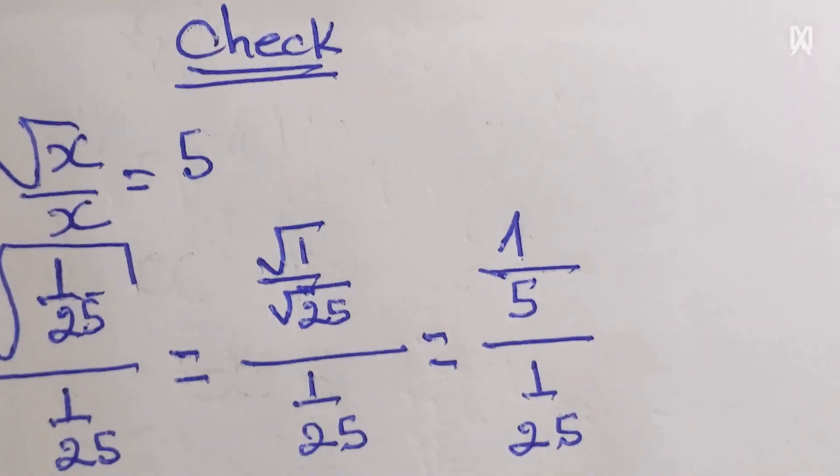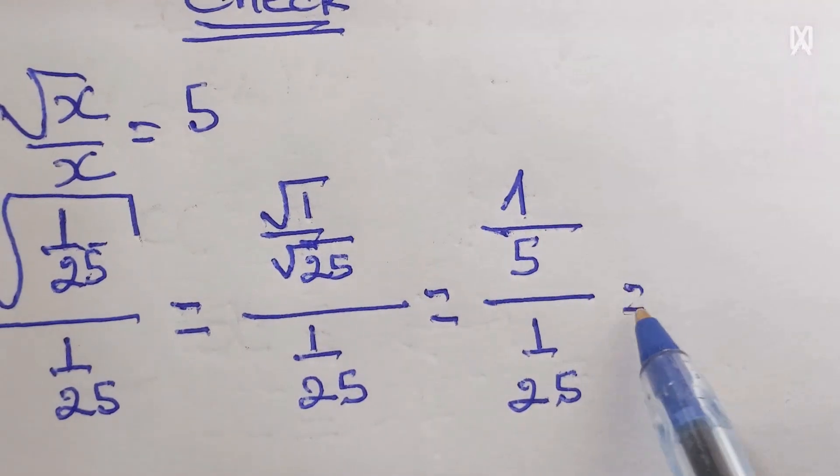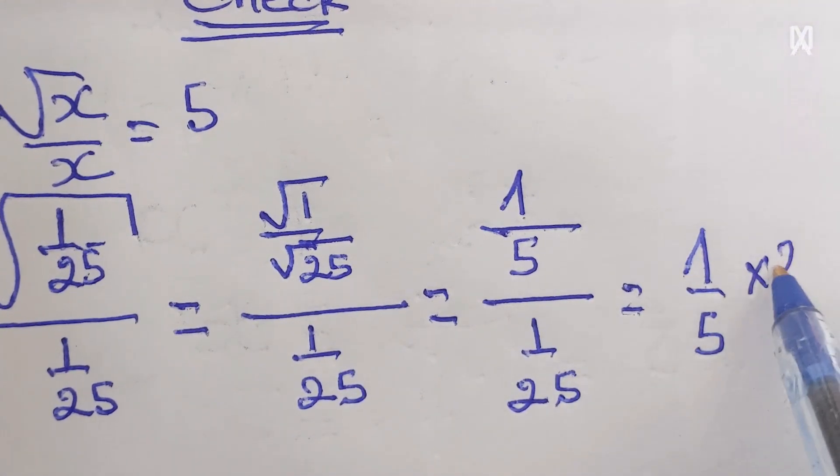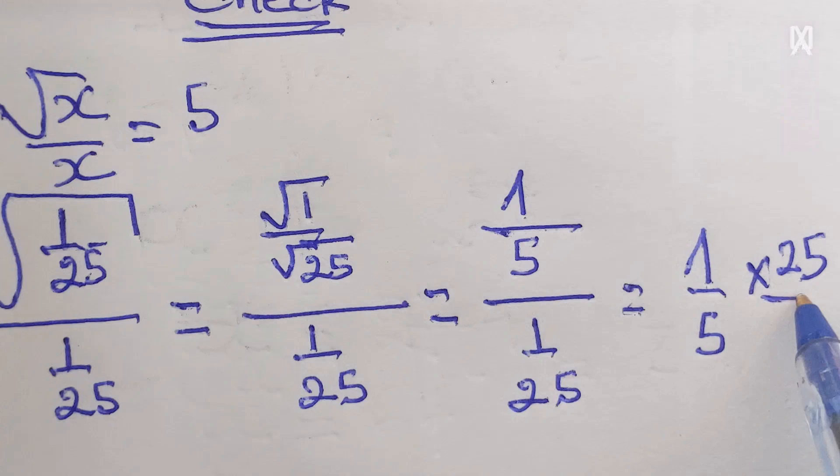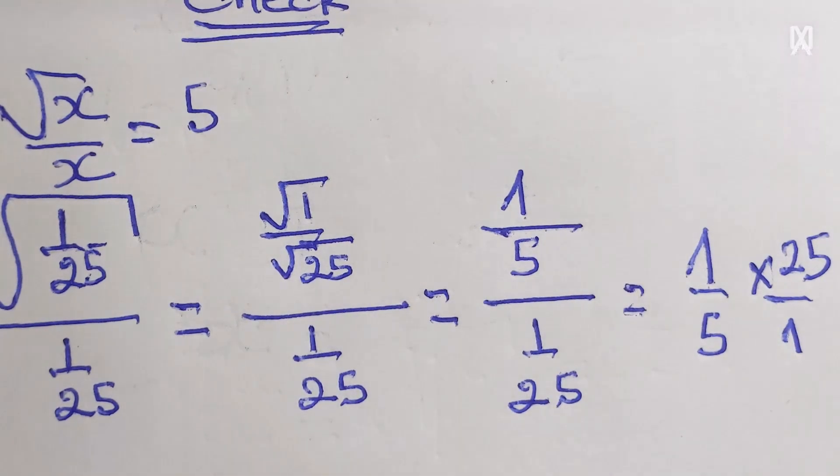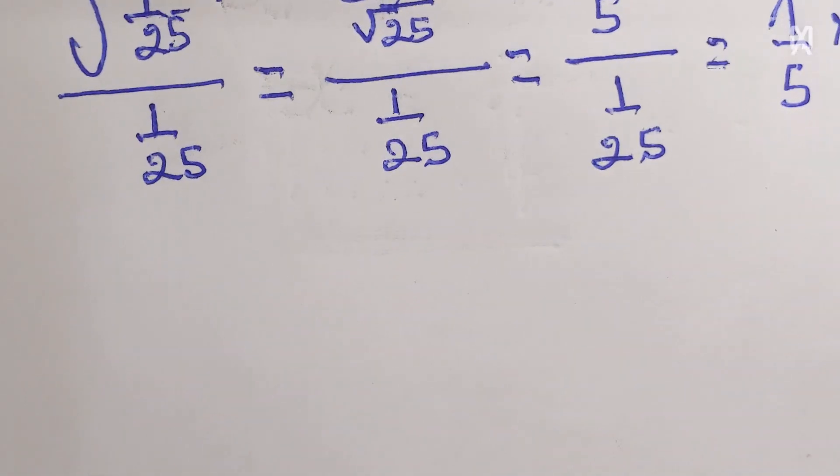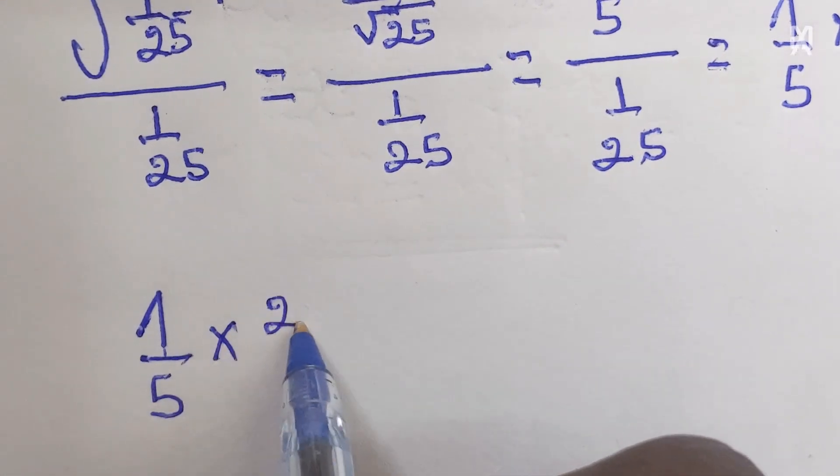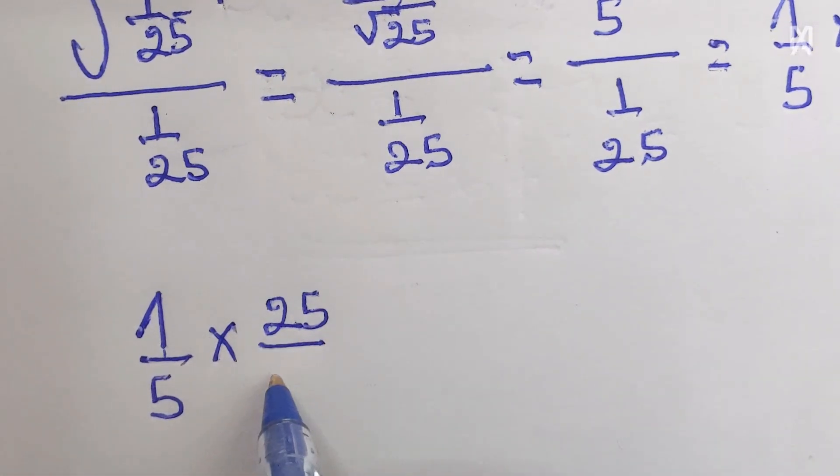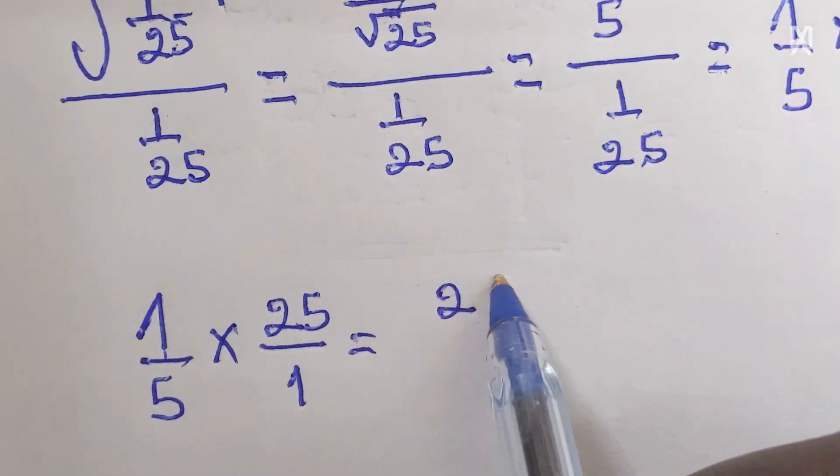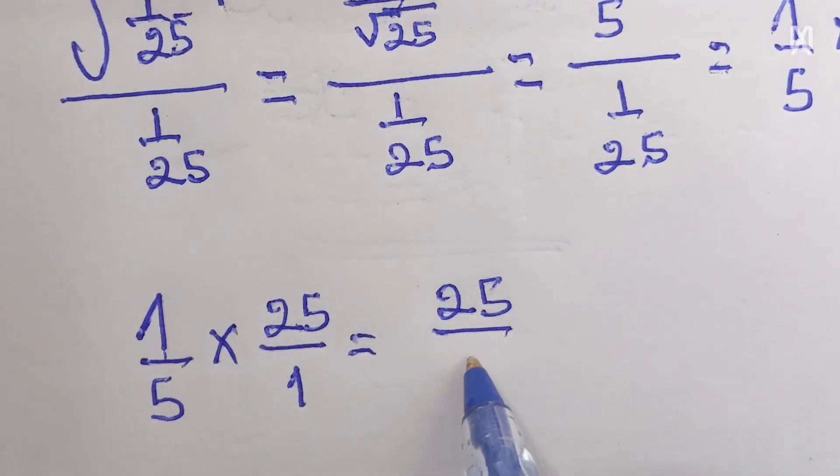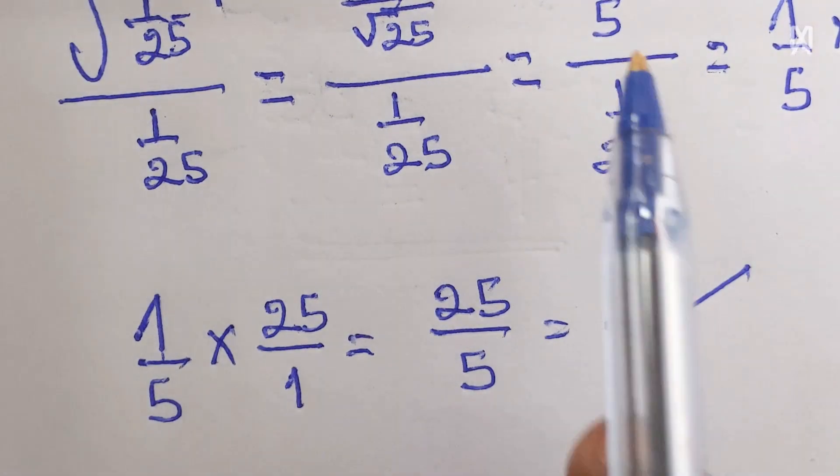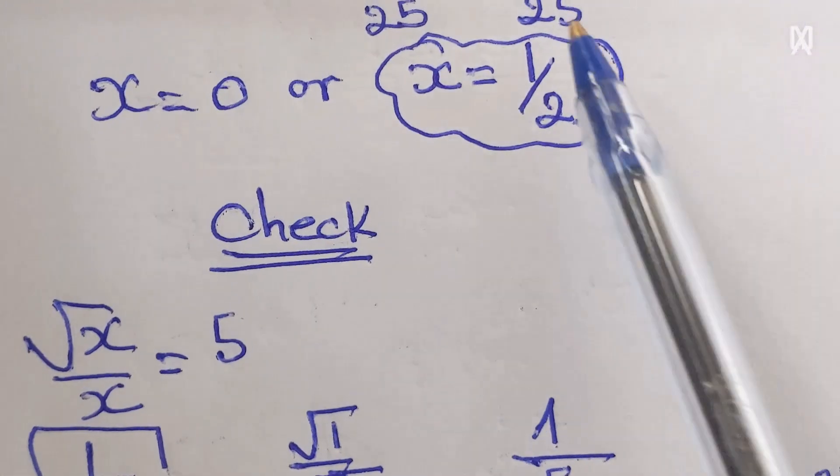Then here this is equal to 1 over 5 then times 25 over 1. 1 over 5 times 25 over 1 this will be equal to 25 over 5 which is equal to 5. This means that our first solution is true.